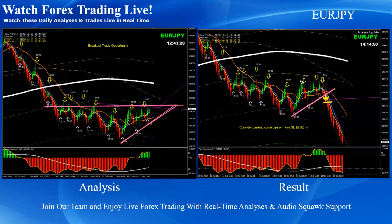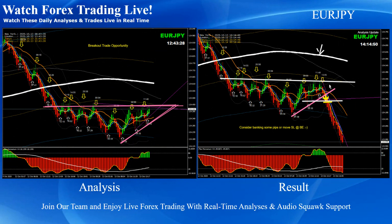Euro yen — the price basically respected this level many times. At the New York session, we mentioned the safest trade was to look for the breakout. As soon as the price broke the recent low — because the price was below the 200 EMA and the momentum was developing bearish — this was the right place to enter. As soon as the price hit the support level, we mentioned to bank some profit. All these updates happen in real time, broadcast through live audio squawk.